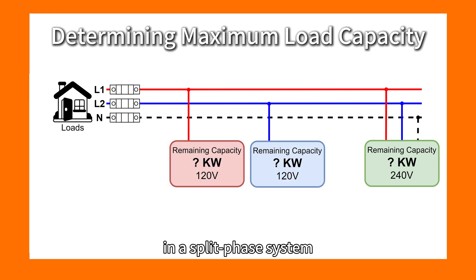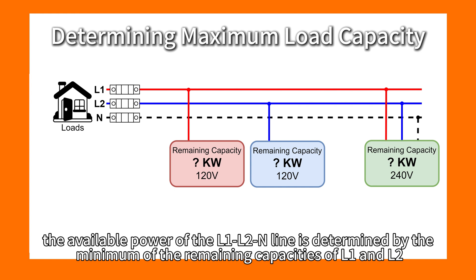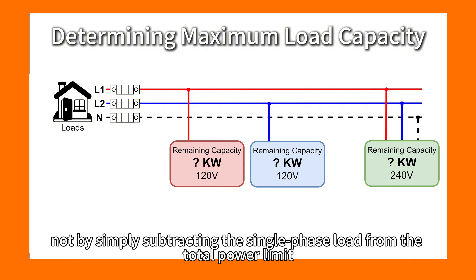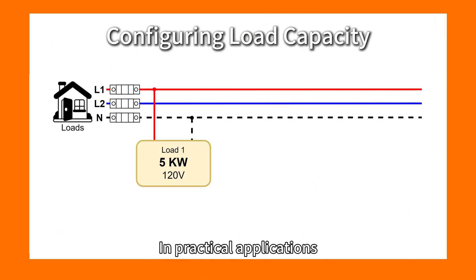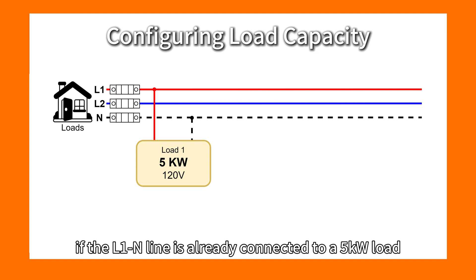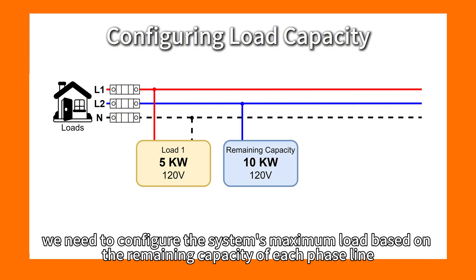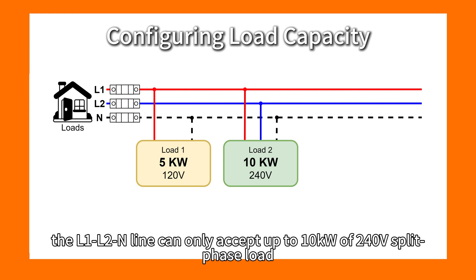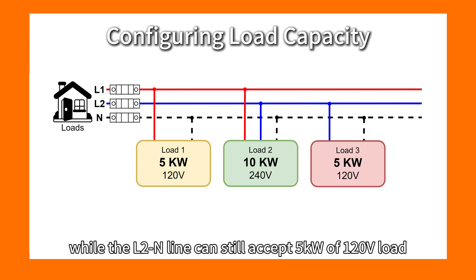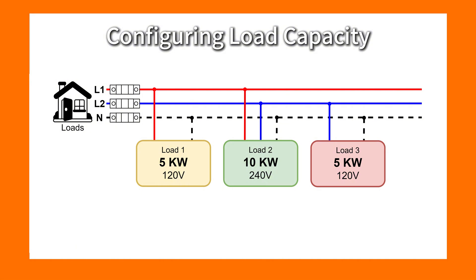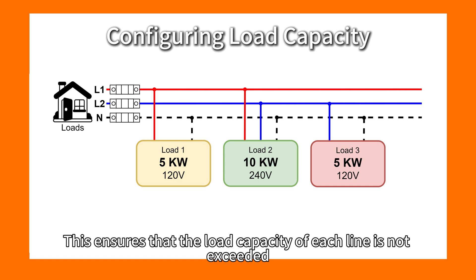Therefore, in the split-phase system, the available power of the L1-L2 line is determined by the minimum of the remaining capacities of L1 and L2, not by simply subtracting the single-phase load from the total power limit. In practical applications, if L1 is already connected to a 5kW load, we cannot simply add a 50kW 240V split-phase load to the L1-L2 line. Instead, we configure the system based on remaining capacity: the L1-L2 line can only accept up to 10kW of 240V split-phase load, while the L2 line can still accept 5kW of 120V load.